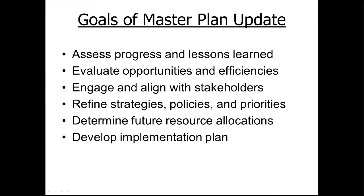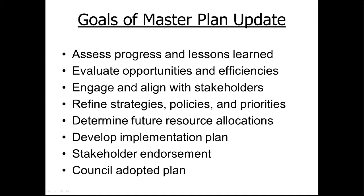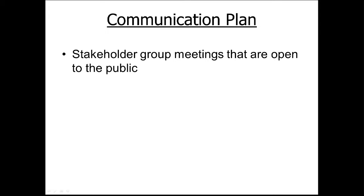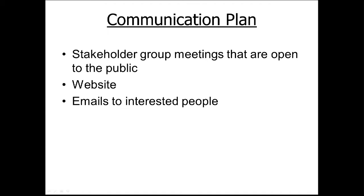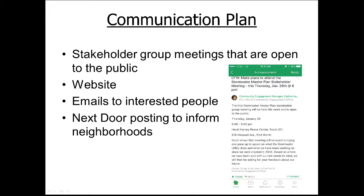We want to develop an implementation plan with short-, mid-, and long-range objectives so we know where we're trying to go during the next 10 years. We want stakeholder endorsement for our master plan product and ultimately City Council adoption. To ensure public feedback, we're having stakeholder group meetings open to the public, maintaining a website, sending emails to interested people involved in prior stormwater efforts, and posting information on the City Calendar and on Nextdoor to reach more people interested in participating.